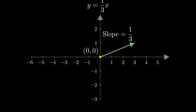Let's plot some points using this pattern. Starting from the origin, if we go right three units and up one unit, we get the point three one. Going right three more units and up one more unit gives us six two. We can also go left from the origin.